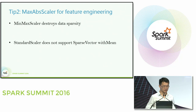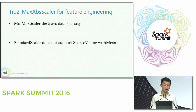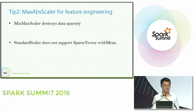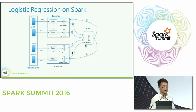One more tip before my colleague presents: if you want to do feature engineering with sparse data, please use MaxAbsScaler. The other two scalers in MLlib — MinMaxScaler and StandardScaler — will both destroy the sparsity of your data. So if you are dealing with sparse data, please use MaxAbsScaler. Next, please welcome my colleague Ding Ding to present the part about logistic regression.